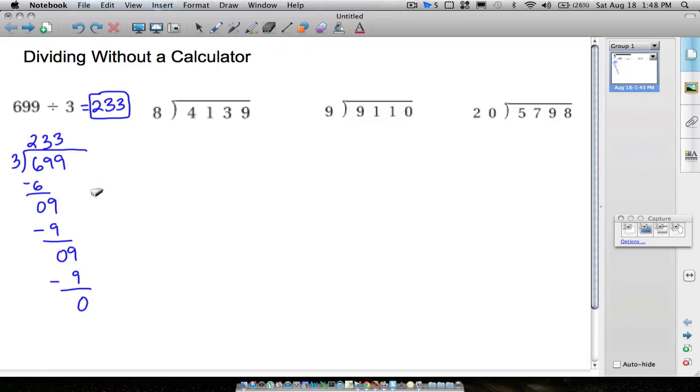Now, sometimes we do have remainders, and I'm going to show you an example here. Also, what you want to take note is, if 8 will not go into 4, and it definitely does not, we want to consider 41 instead of just 4. So 8 goes into 41 five times, because 5 times 8 is 40. Yes, we have something left over. 41 minus 40 is 1.